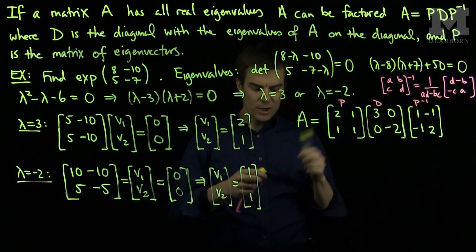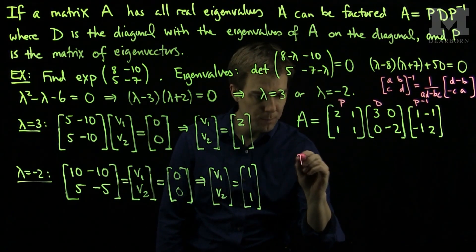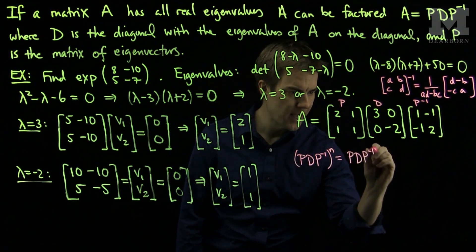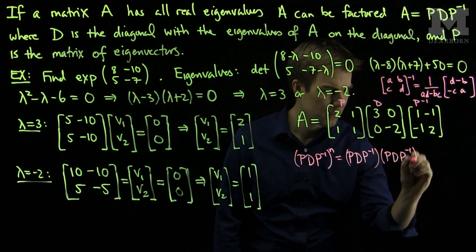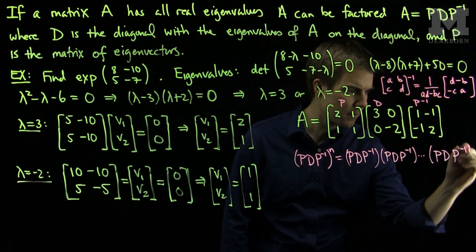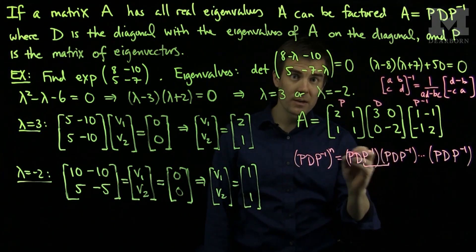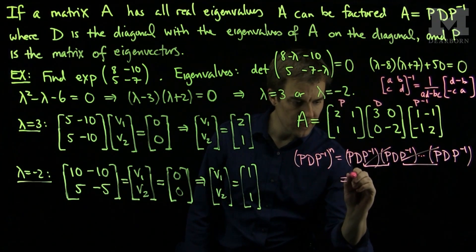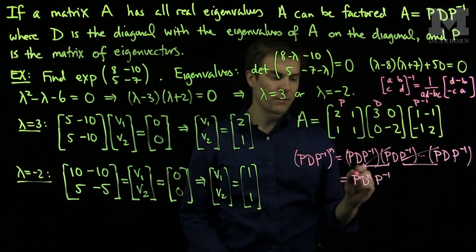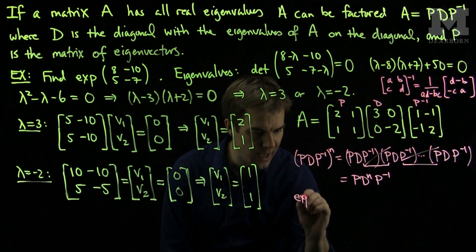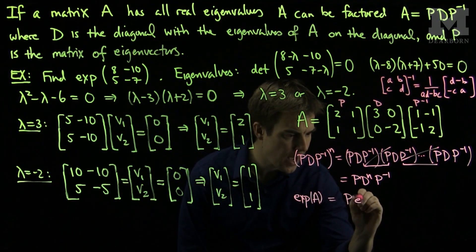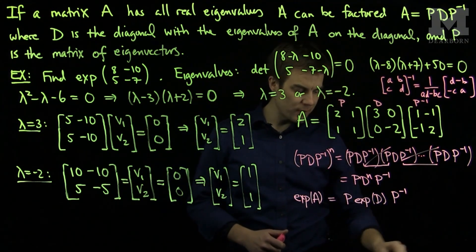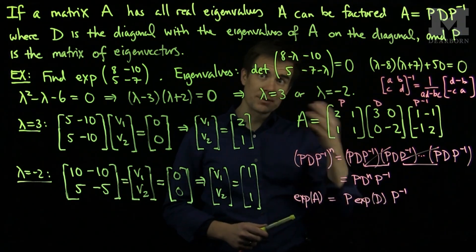The nice thing about this factorization is that when I compute any power, (PDP⁻¹)ⁿ, I multiply this expression by itself n times. Every time I do a multiplication I have a P and P inverse next to each other and those cancel, leaving P Dⁿ P inverse. From this it follows that the exponential of A will be P times the exponential of D times P inverse, by adding up all these terms. We saw in previous videos how to express the exponential of a diagonal matrix by exponentiating the diagonal entries.